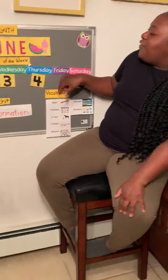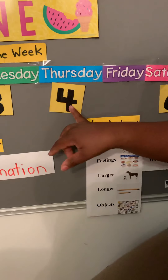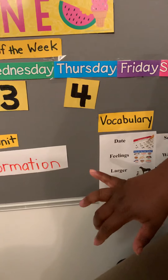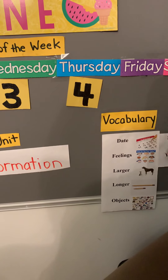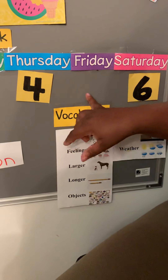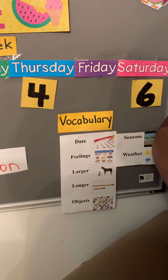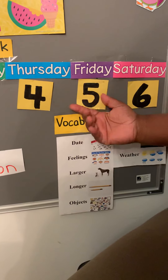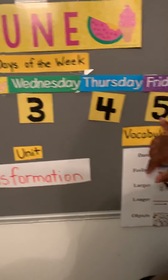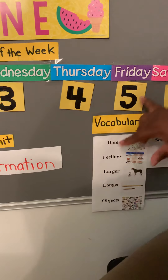So today is Friday — what number is today? Yesterday was four, and tomorrow will be six, so what number goes in between four and six? Five! Today is Friday, June 5th — it is the fifth day of June. And tomorrow will be Saturday the sixth.